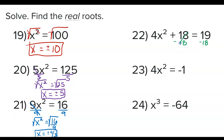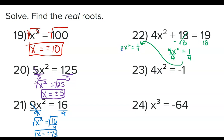Problem 22: subtract 18 from both sides, leaving 4x² = 1. Divide both sides by 4, giving x² = 1/4. To get rid of the squared, square root both sides — that's an even root, so I need the plus or minus symbol. To square root a fraction, square root the top and bottom: the square root of 1 is 1 and the square root of 4 is 2, so x = ±1/2.